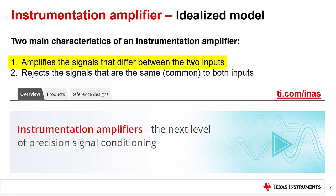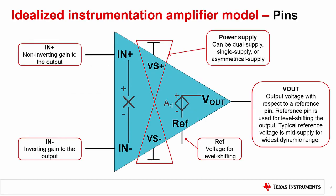We will first discuss the first characteristic, the ability of an IA to amplify the signals that differ between the two inputs. Before delving into this function though, let us first define the various pins on an IA.